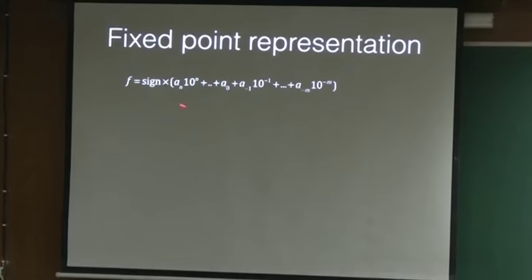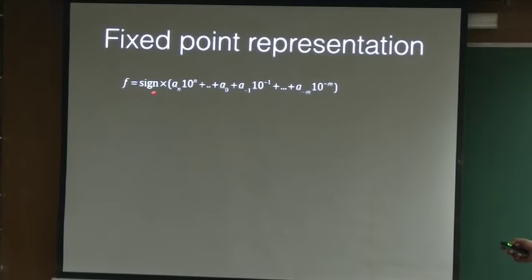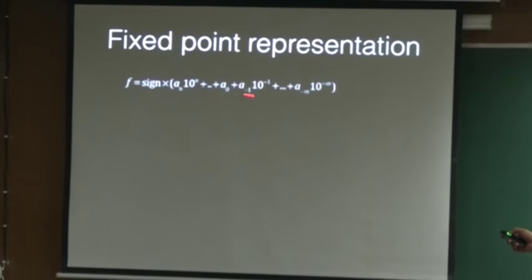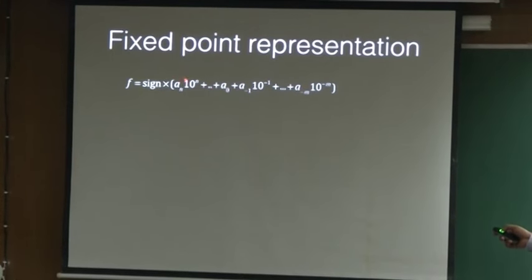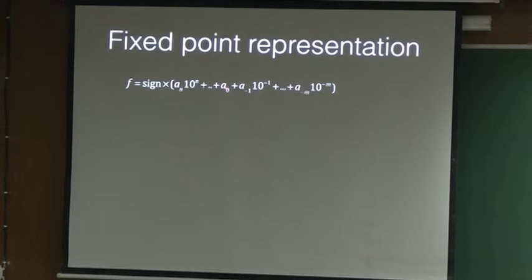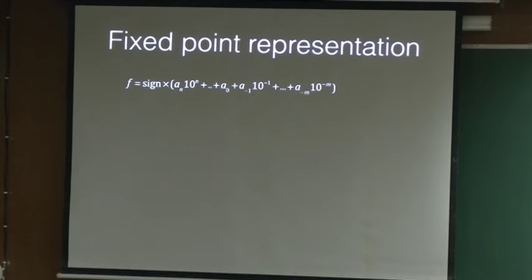If you write in terms of formula it is going to look like this. The less-than-1 numbers: this is 1, this is 1 by 10, 1 by 10 to the power m, and 10 to the power n. With this we can represent any real number, but the decimal point is somewhere fixed here. This is called fixed point representation. We use this most often in our daily life.